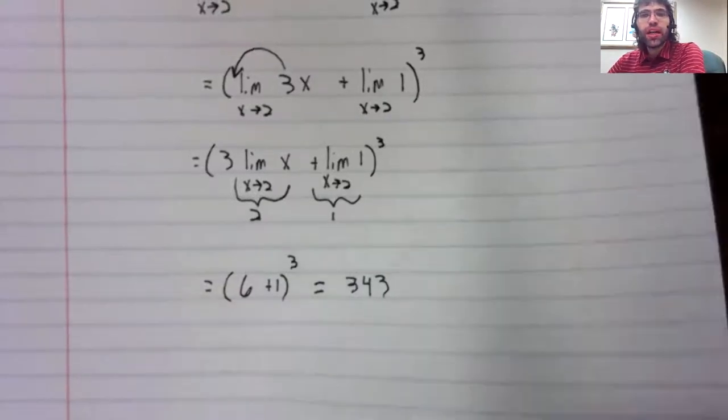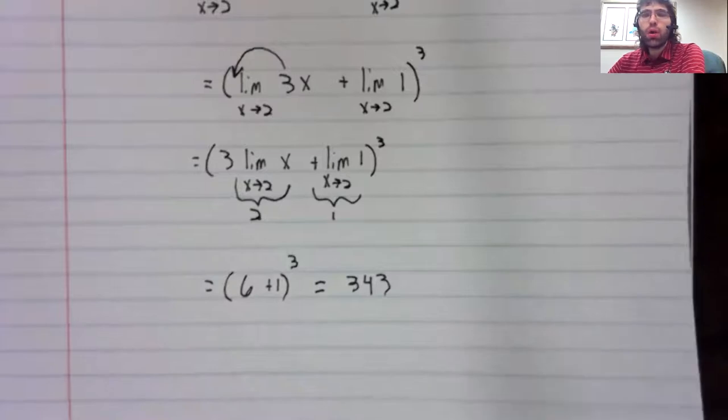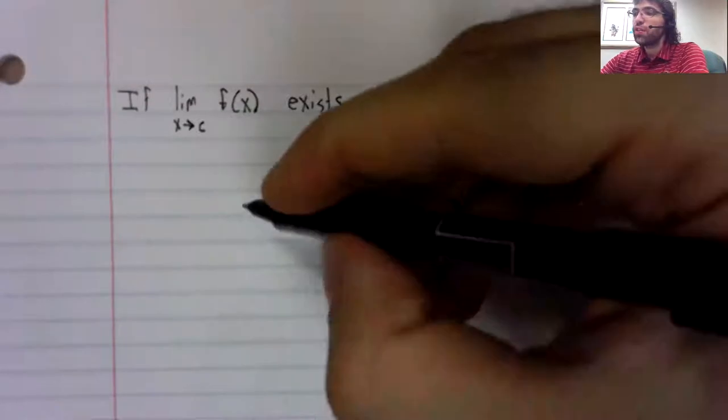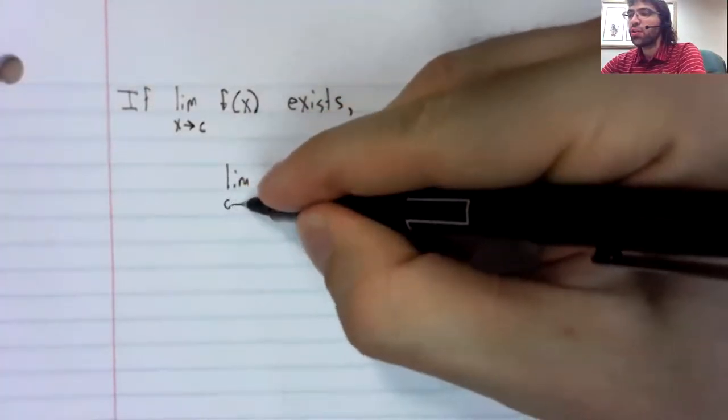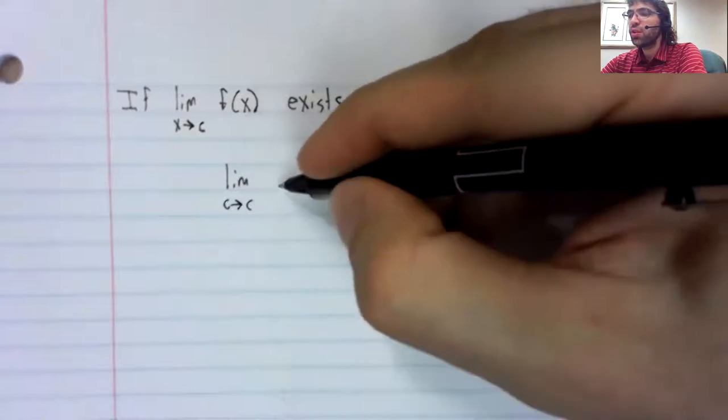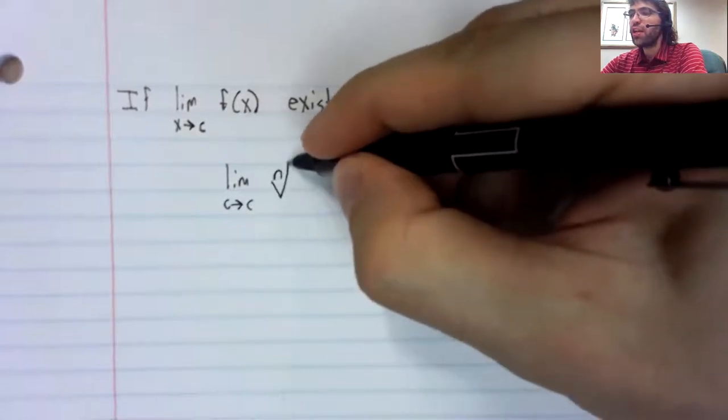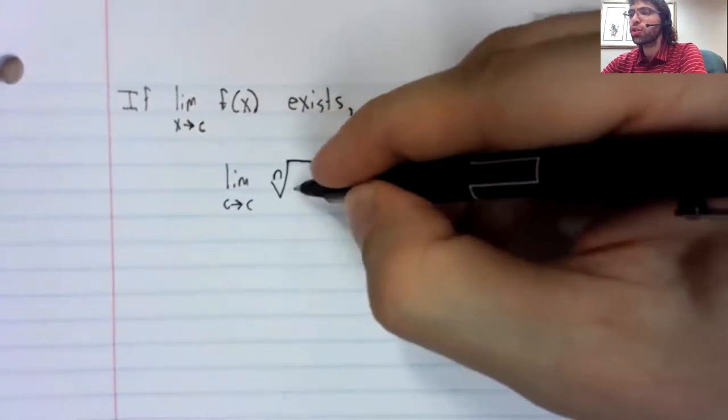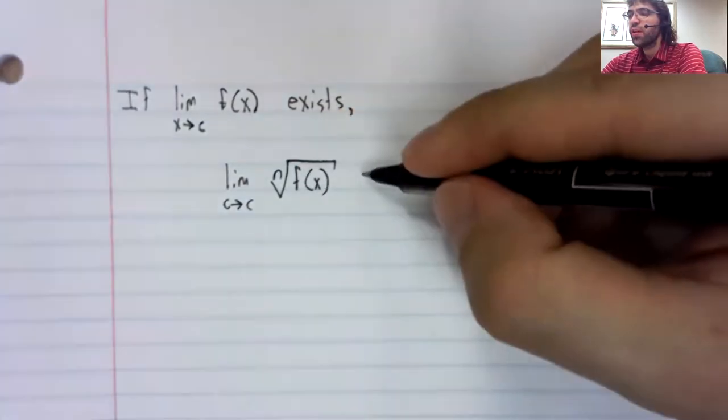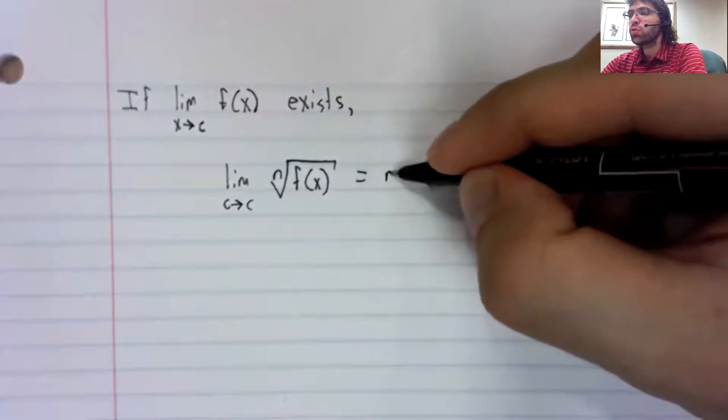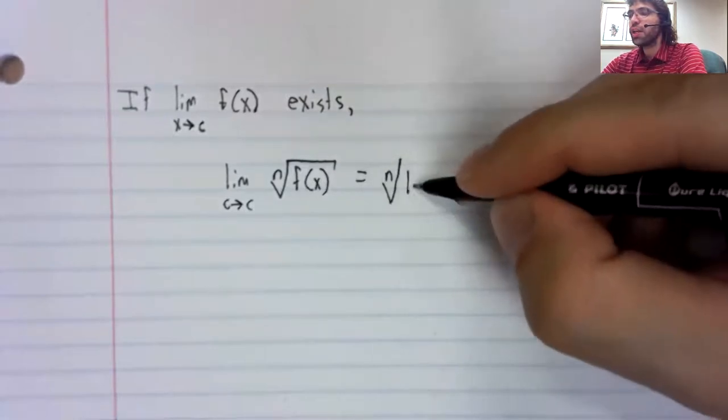And now the last rule on this list. This rule says that the limit of a root is the root of the limit.